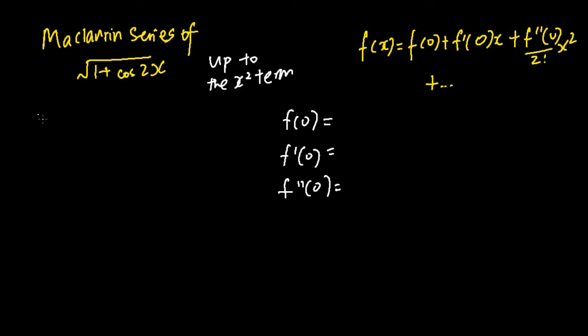To start the problem, we first have to define our function of x. So f(x) would be the square root of 1 plus cosine 2x.